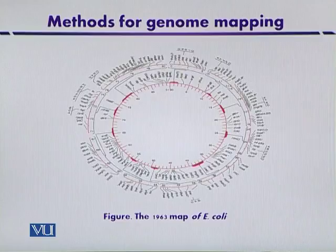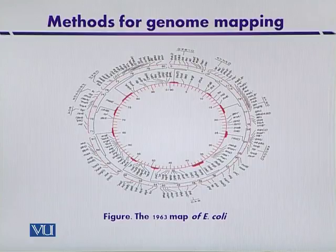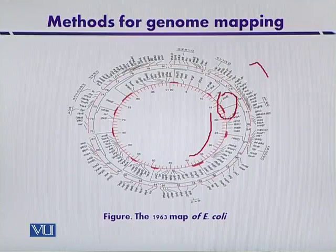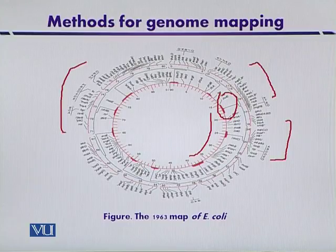This is the map of E. coli constructed in 1963, showing the location of around 100 genes on the chromosome. This map was constructed using interrupted mating. The inner circle shows the time at which the interruption was made, and certain regions are further magnified to indicate the position of different genes along the chromosome.